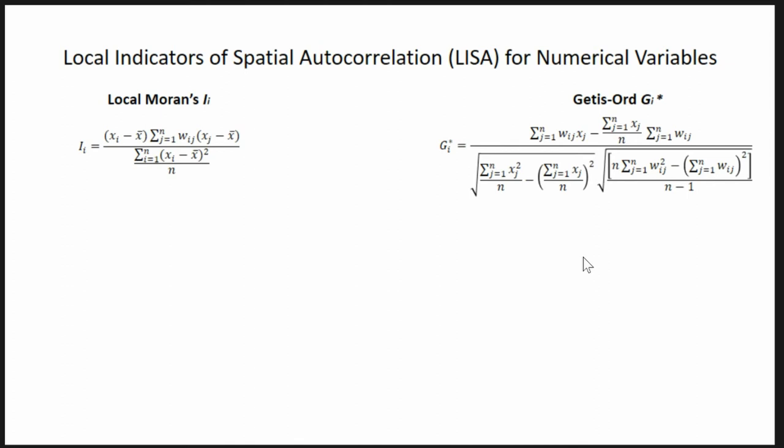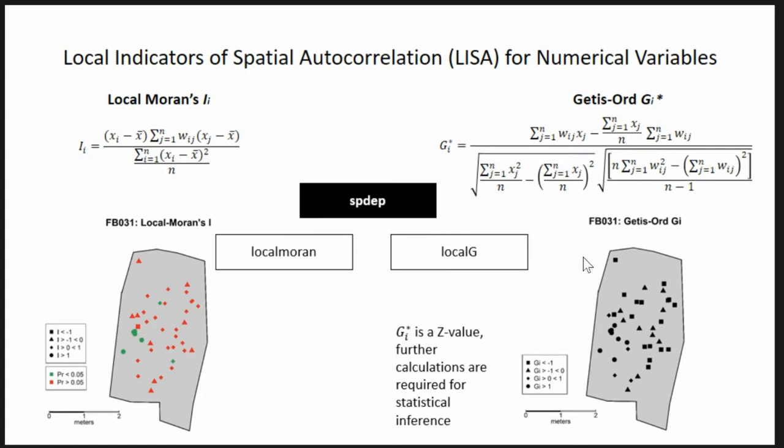Again, two main tests: local Moran's I and Getis-Ord G. These are the two plots. Local autocorrelation is basically the estimation of autocorrelation for every single spatial feature, which is really useful because it enables us to assess the existence of classes of spatial autocorrelation, what is usually called hot spots and cold spots. I prefer local Moran's I because both tests are implemented in spdep. I prefer local Moran's I because it provides an estimation of the I that can be plotted but also the significance value, whereas Getis-Ord is a z-value, so the significance of the values estimated by the function has to be calculated separately.